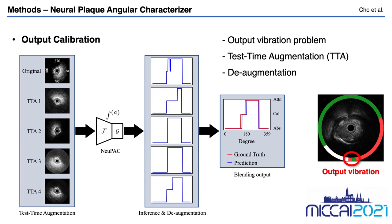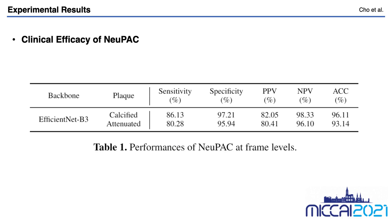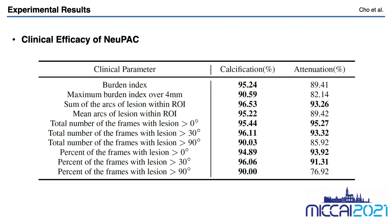To evaluate from engineering performance to clinical efficiency, a number of metrics are measured: sensitivity, specificity, PPV, and NPV for the presence of each IVUS classification and attenuation. Additionally, to evaluate clinical efficiency, we calculate clinical parameters from the predicted plaque composition vectors. These clinical parameters are evaluated by Pearson correlation coefficient. The results validate that NeuPAC has efficiency in helping clinicians make decisions as well as achieving micro-level accuracy.